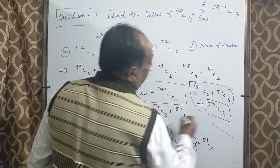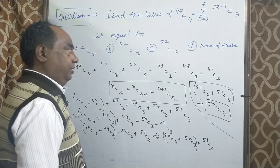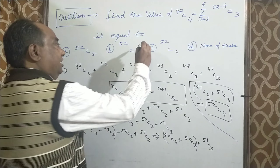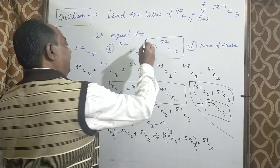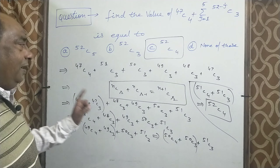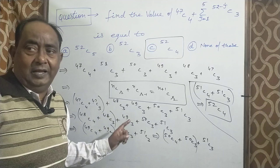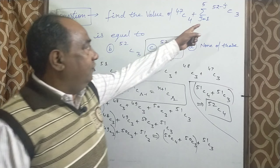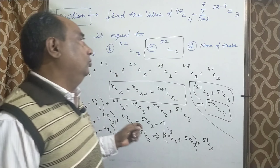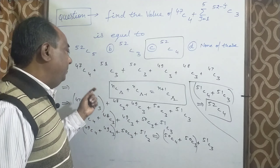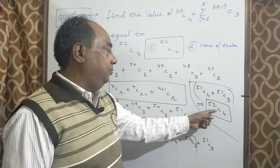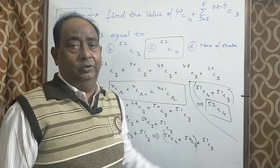तो हमारे इस question का answer 52C4 है, यानि C option correct है। इसमें मैंने Pascal rule apply किया, J की value 1 से 5 तक put की। Pascal rule के according हमारा answer 52C4 है।